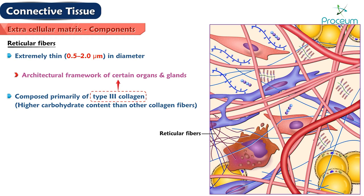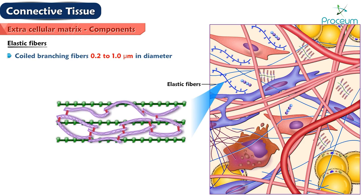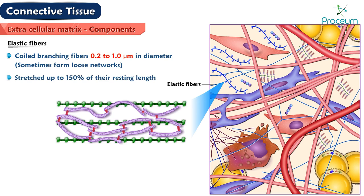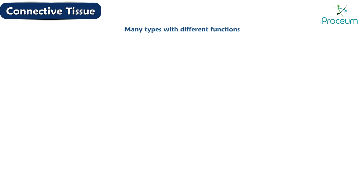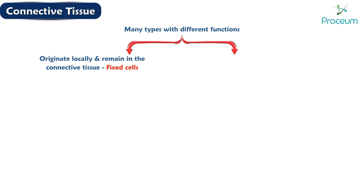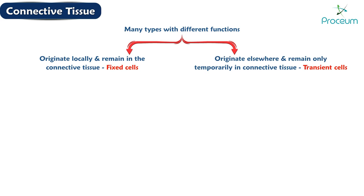Type 3 collagen fibers constitute the architectural framework of certain organs and glands. Elastic fibers are coiled branching fibers, 0.2 to 1 micrometer in diameter, that sometimes form loose networks. These fibers may be stretched up to 150% of their resting length. Connective tissue cells include many types with different functions. Some originate locally and remain in the connective tissue — fixed cells — whereas others originate elsewhere and remain only temporarily in connective tissue — transient cells.